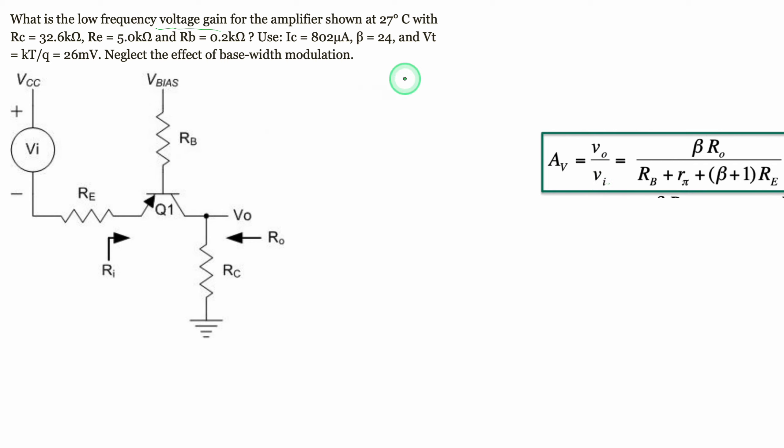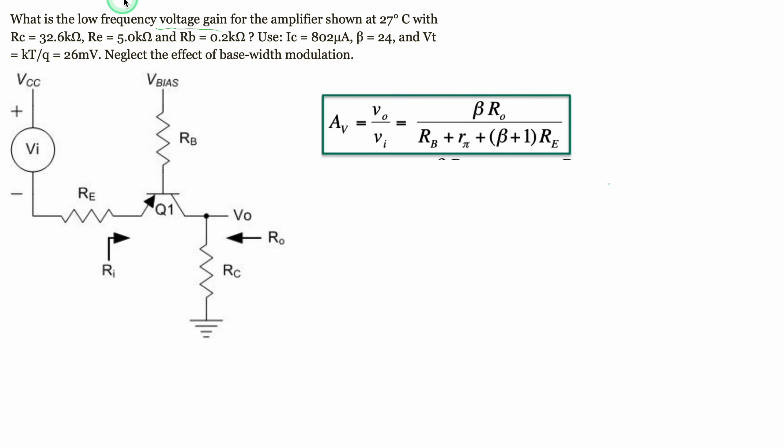We're going to take this and plug in our values. There's a few values that we don't know. One of them is r_pi (R_π), so we need to find this.